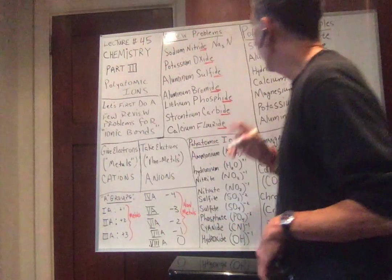Strontium carbide. The -ide ending is for the single element, not the polyatomic. Carbon is in group 4A — needs four electrons. Strontium is in 2A, so it wants to give two electrons — strontium wants to be plus two. Carbon wants to be minus four. Strontium gives two electrons, but carbon needs four, so it takes two strontiums to make one carbon happy. The formula for strontium carbide is Sr₂C.